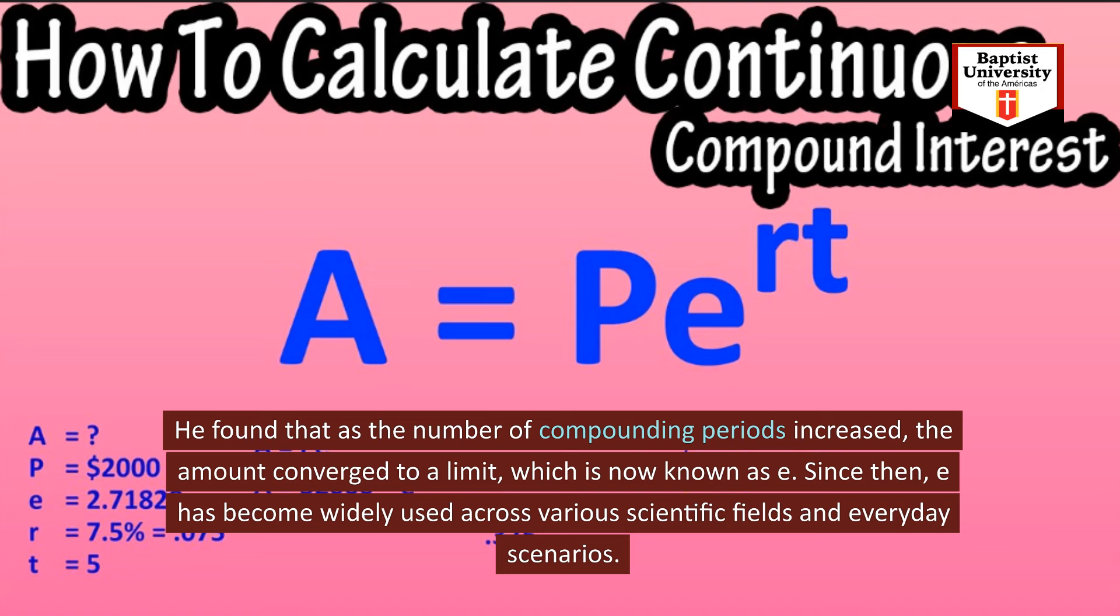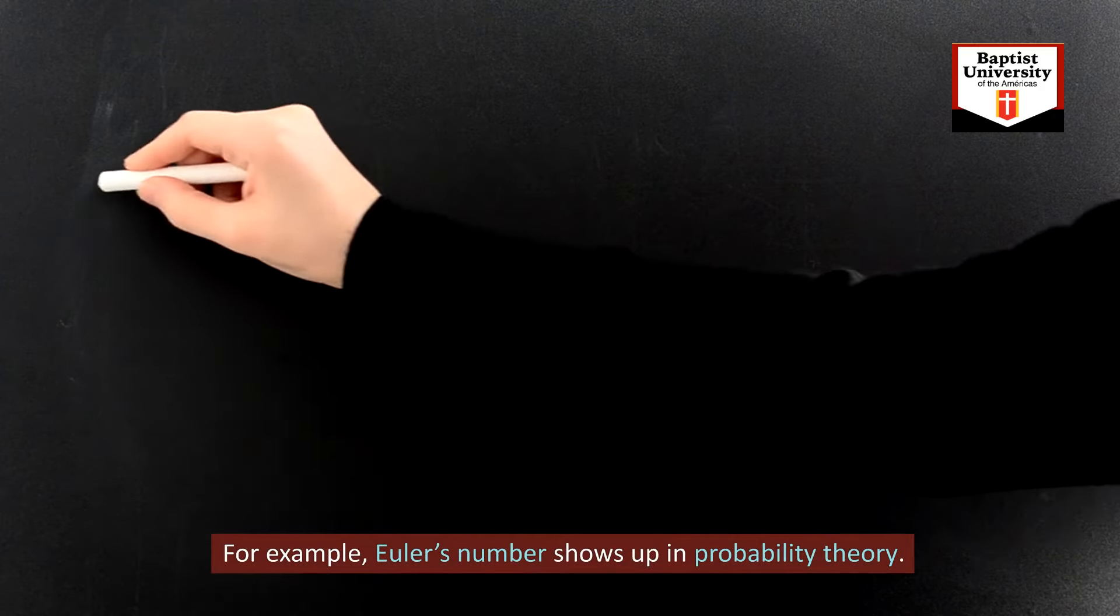Since then, E has become widely used across various scientific fields and everyday scenarios. For example, Euler's number shows up in probability theory.